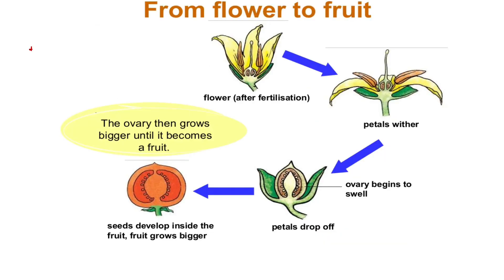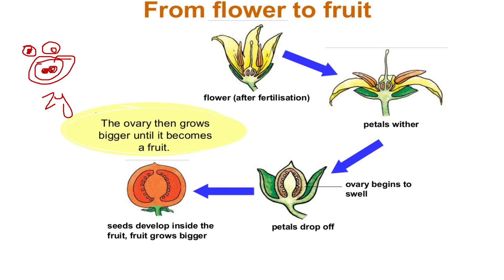Once the pollen grain — coming from the anther — is carried by insects to the stigma, that is pollination. Then with the help of the pollen tube, the male gamete — you can see this small dot, this is the male gamete — meets with the ovules inside the ovary. That meeting is called fertilization. Both nuclei mix together, and this is called the zygote. The zygote is formed inside the ovary of the flower. The zygote is the product of the male gamete and female gamete, and in future, this zygote will become the seed.